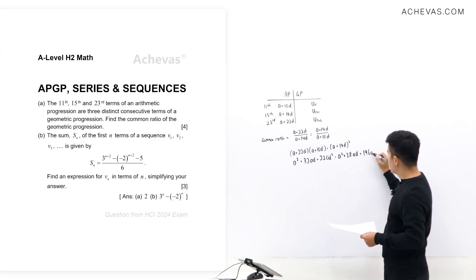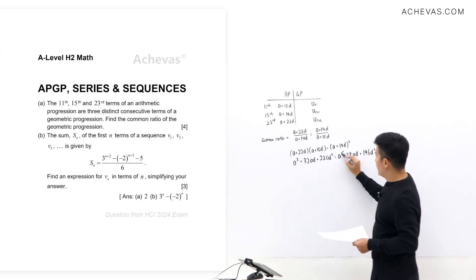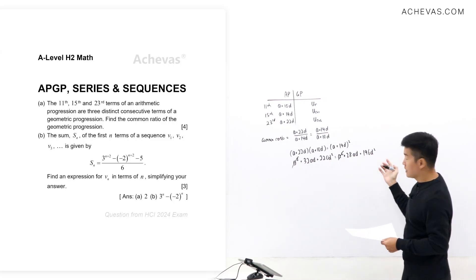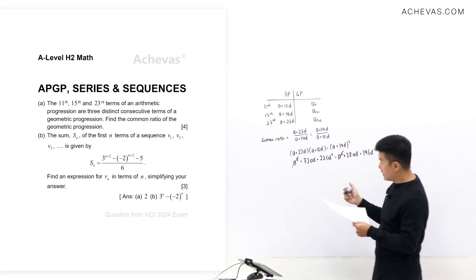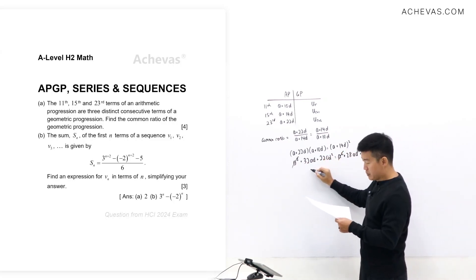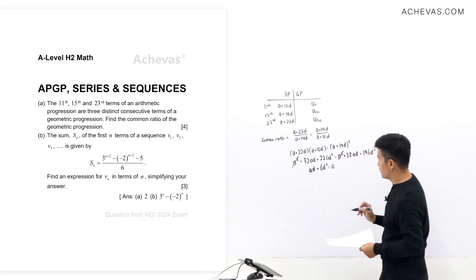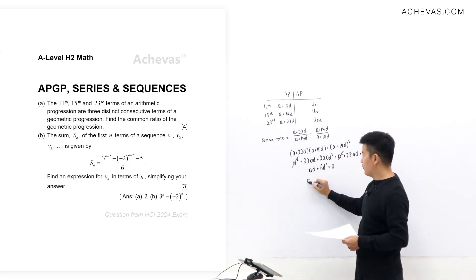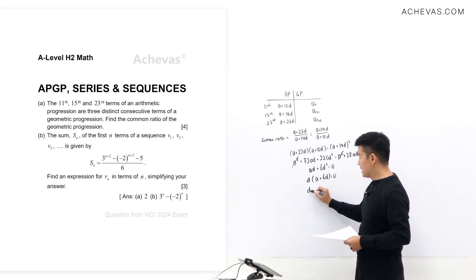The a² terms cancel. Shifting everything to the left-hand side and simplifying, we get 4ad + 24d² = 0, which factorizes to 4d(a + 6d) = 0.